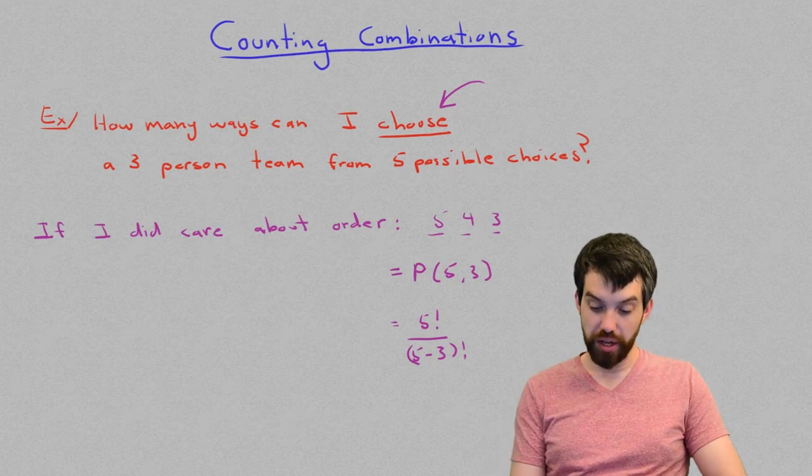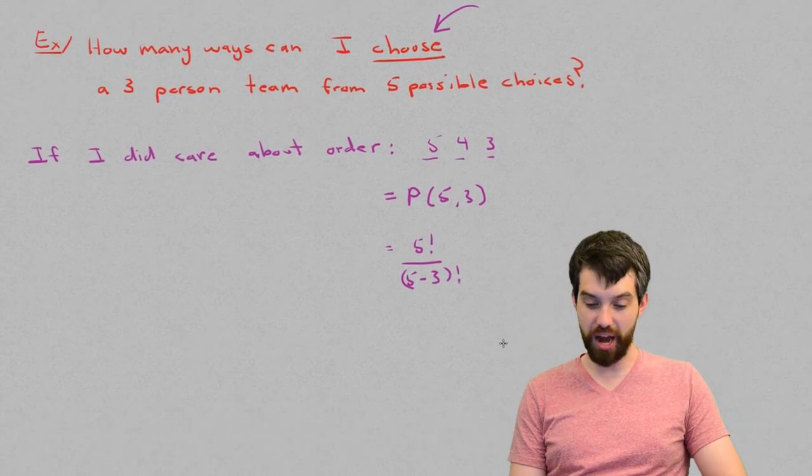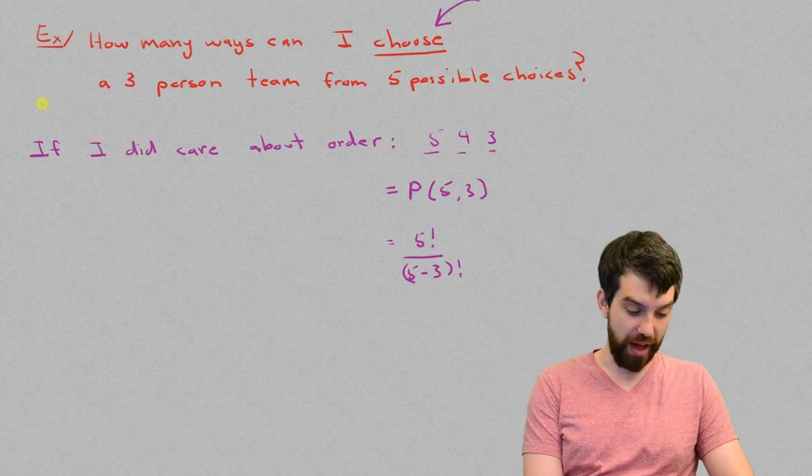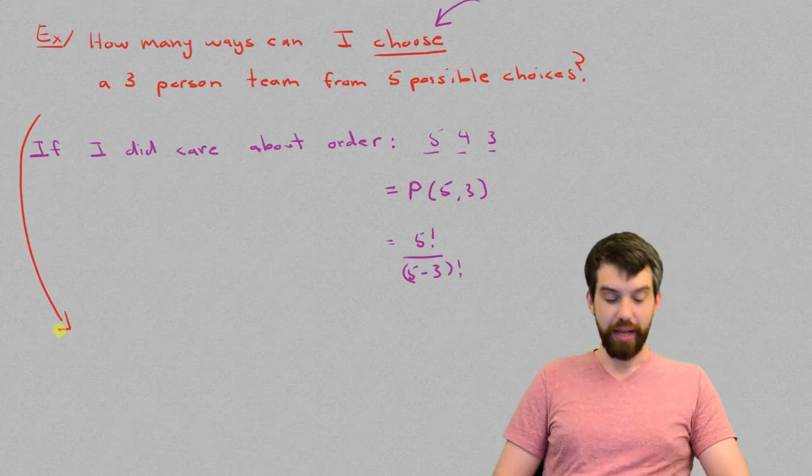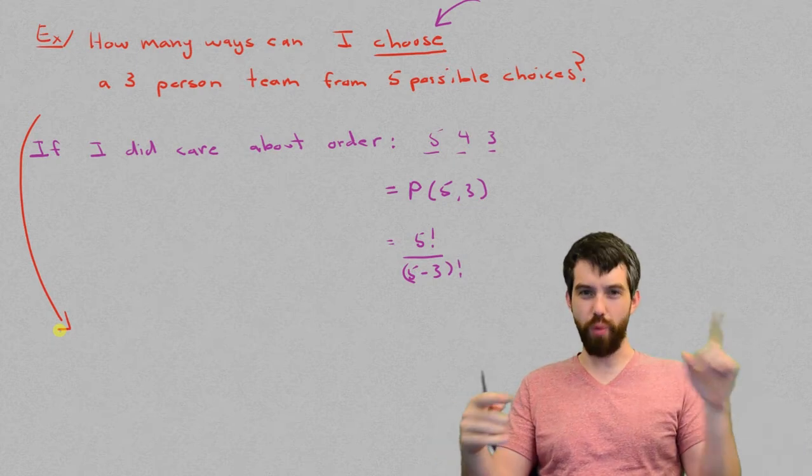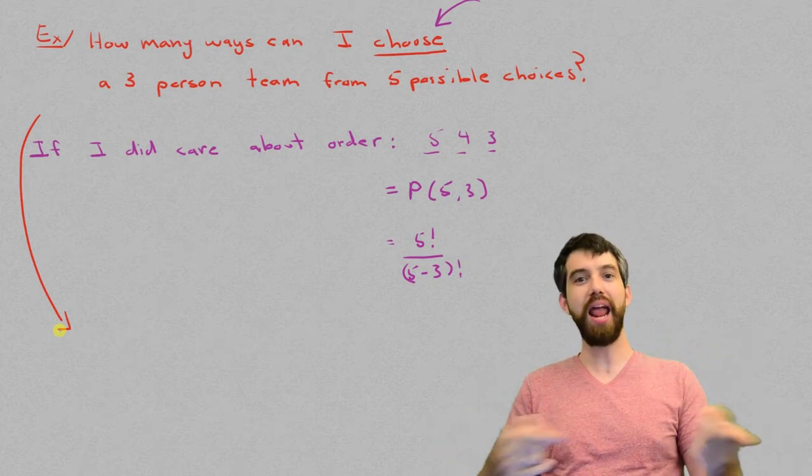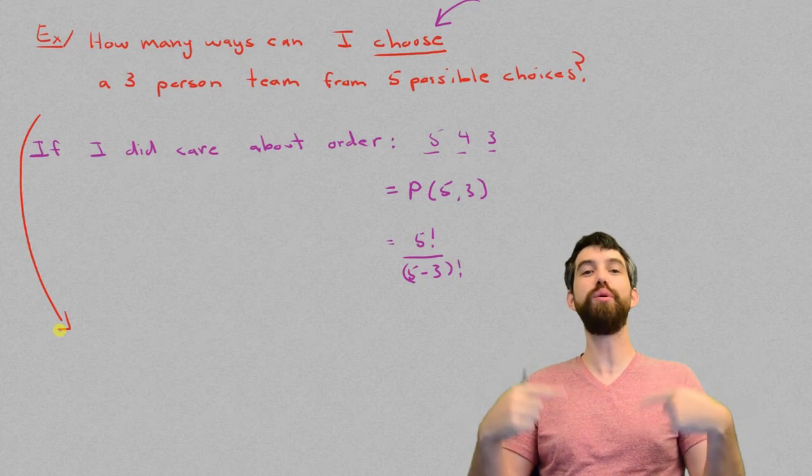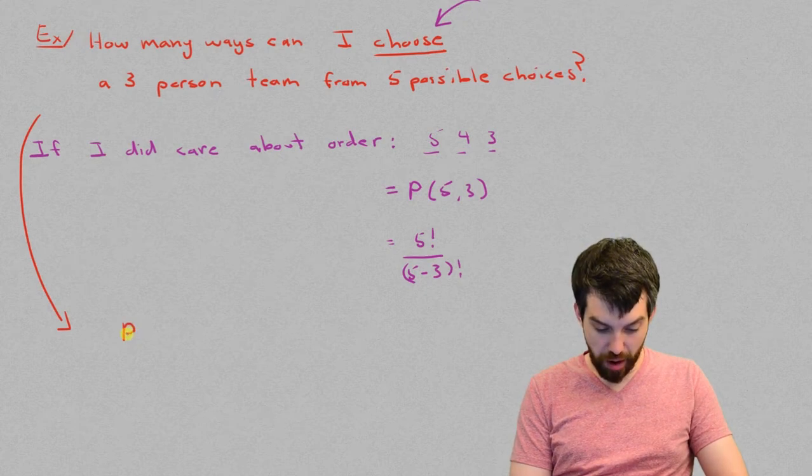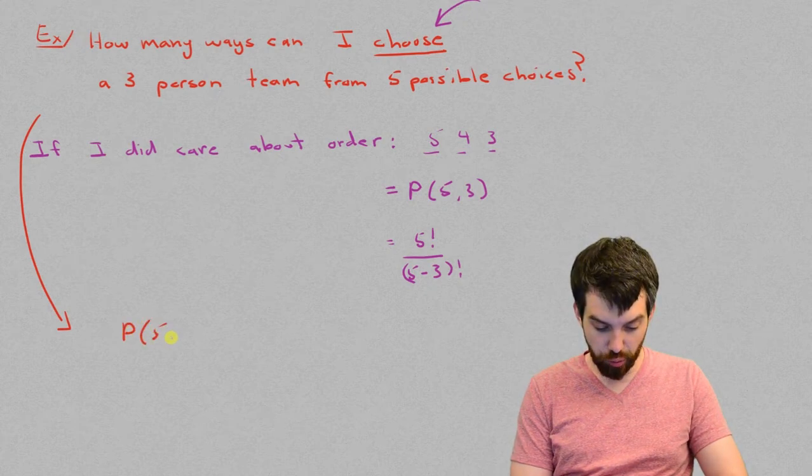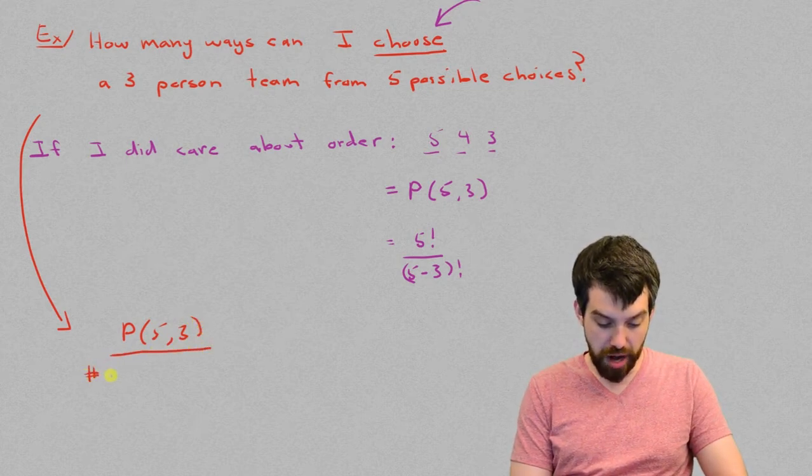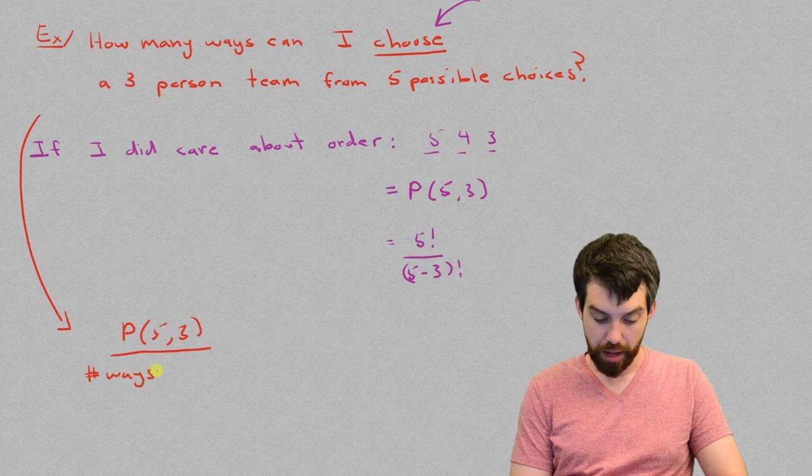So that's how I would have solved the old problem if I did care about order. So my strategy now for this problem, if I return back to the original one, is I'm going to take the number of ways that I could count this when I do care about the order, and I'm going to divide it by the number of ways I can order it. In other words, I'm going to try and figure out what P(5,3) is, we've looked at that, but I'm going to then divide it out by whatever the number of ways that I can order this.